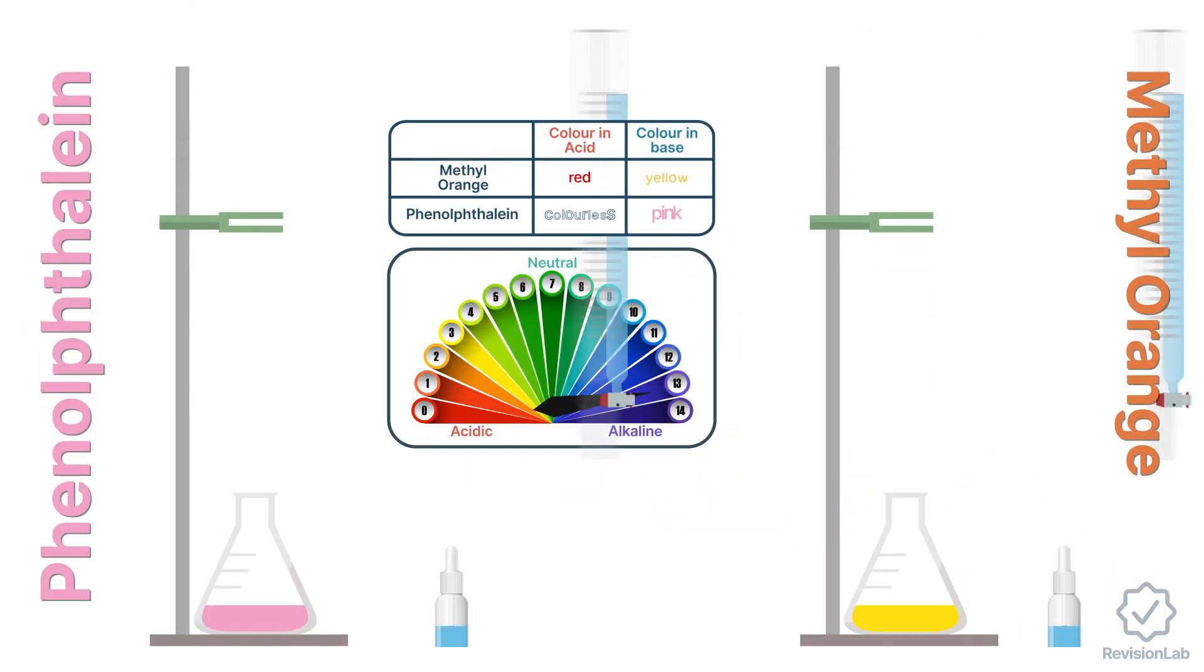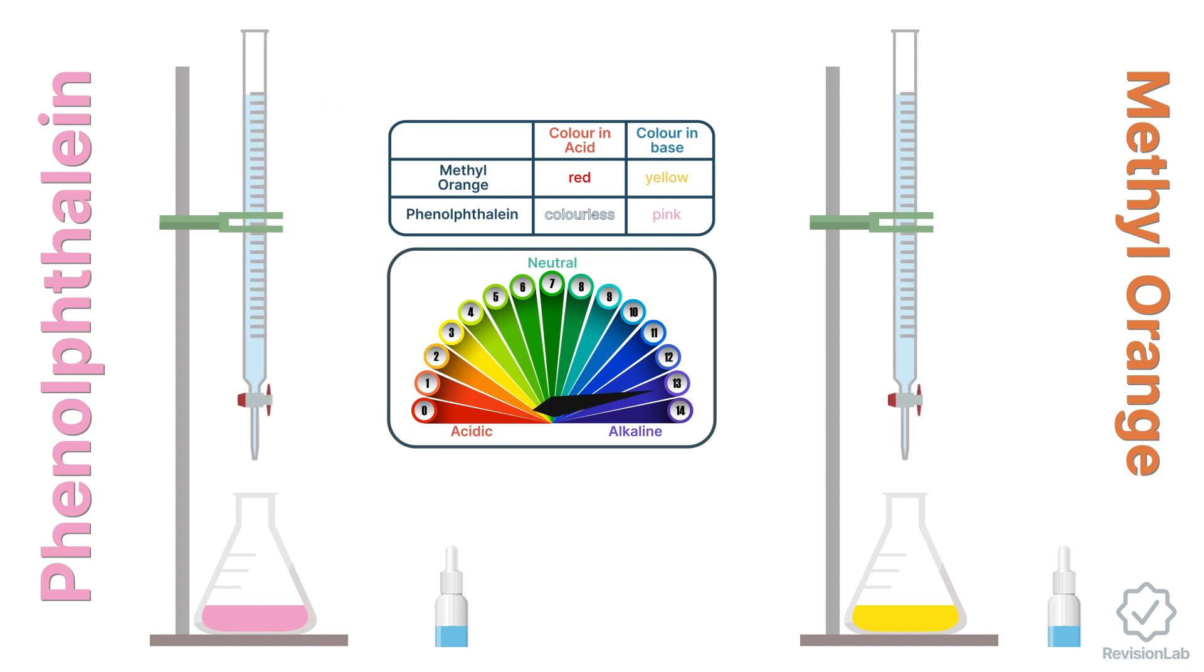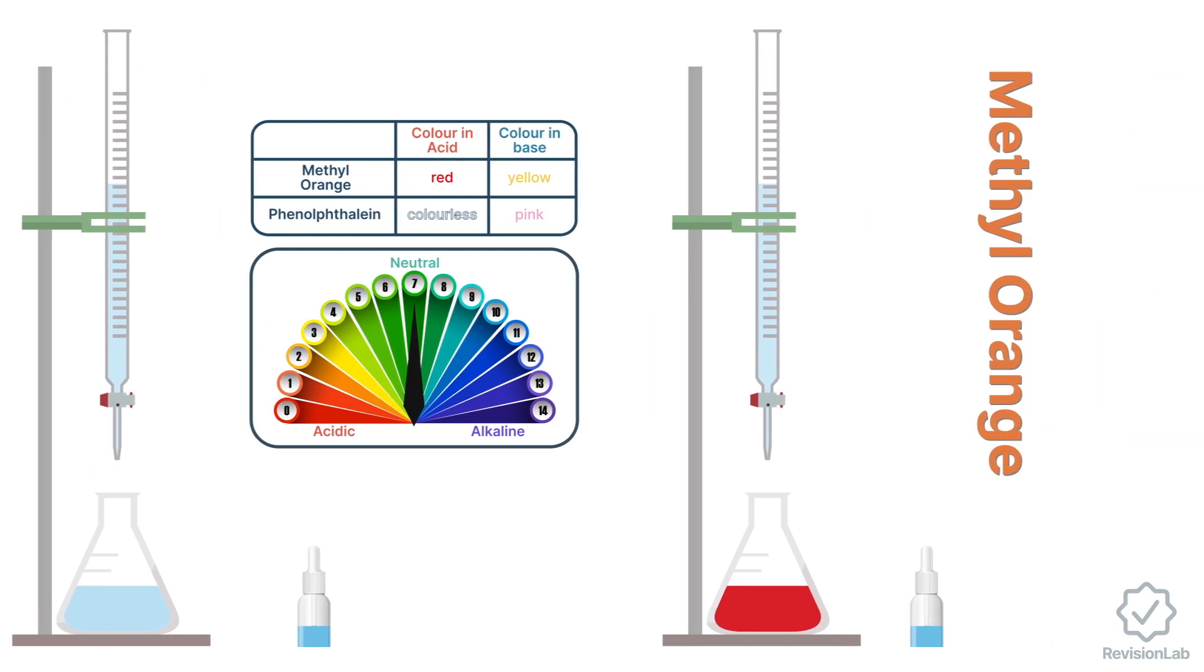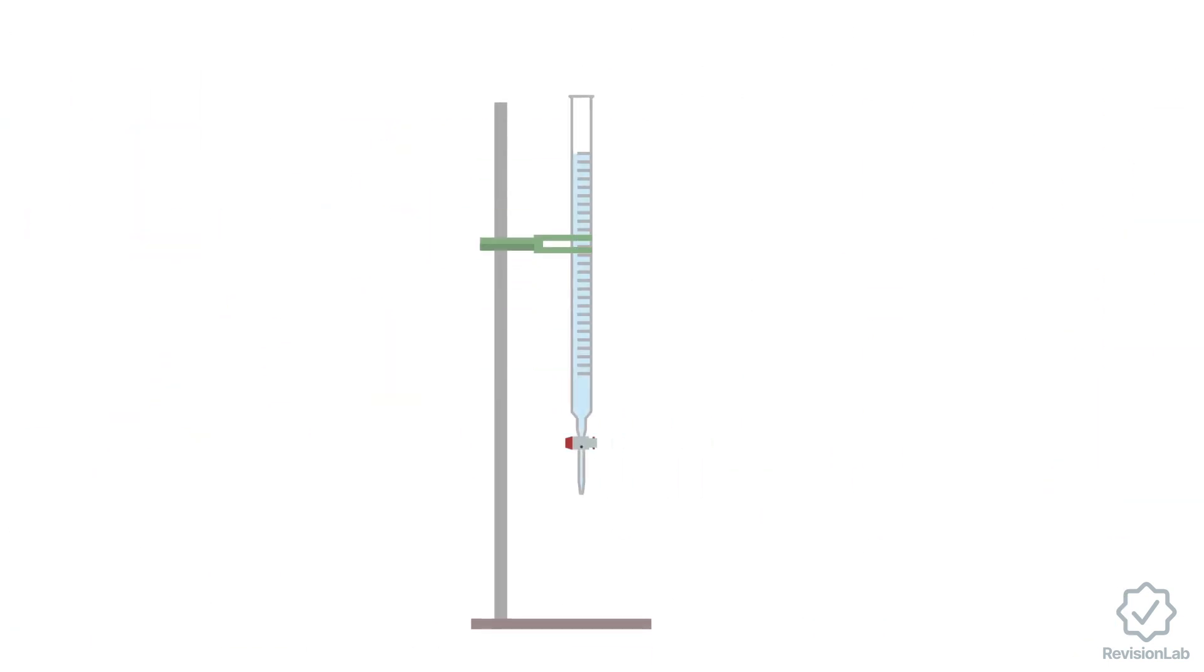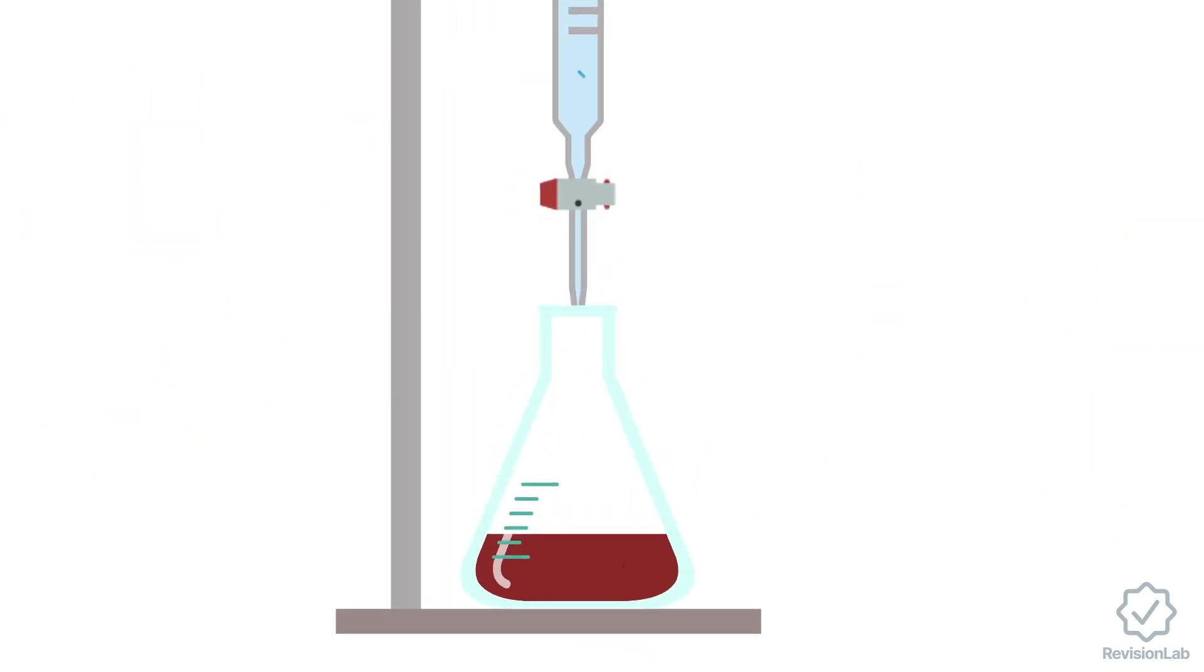Unlike an acid base titration, where we must use an indicator to help us recognize the moment when the acid and base have just neutralized each other, in redox titrations we usually don't require an indicator because the reactants themselves change color.